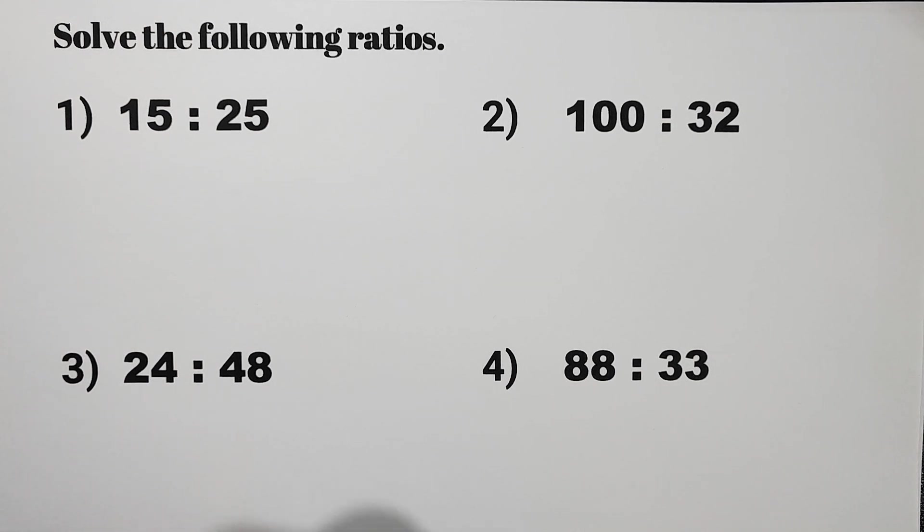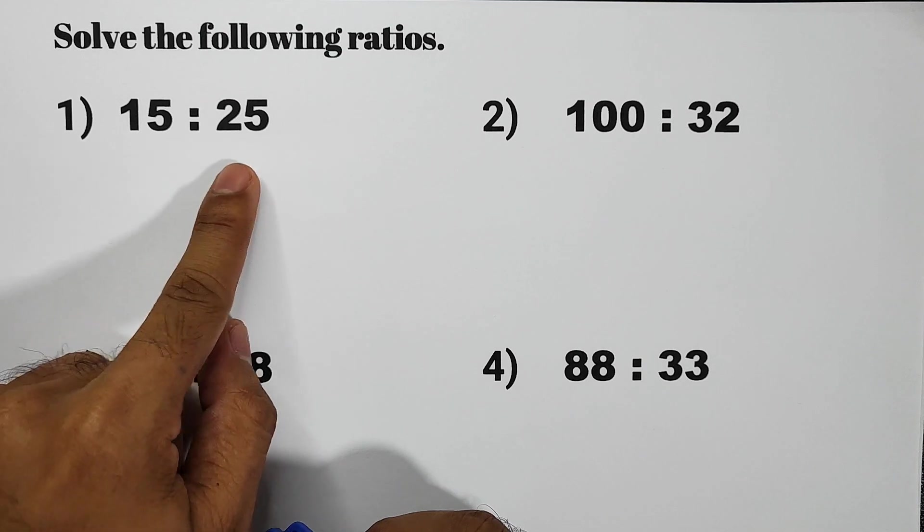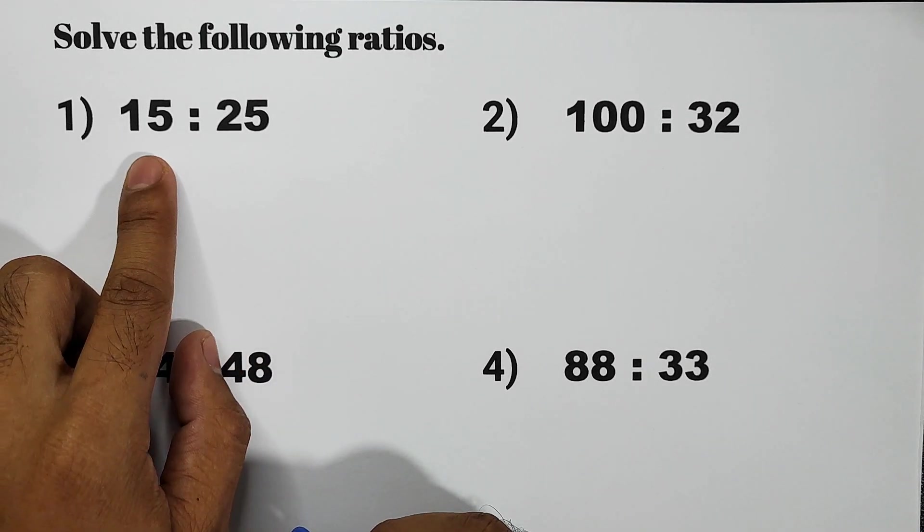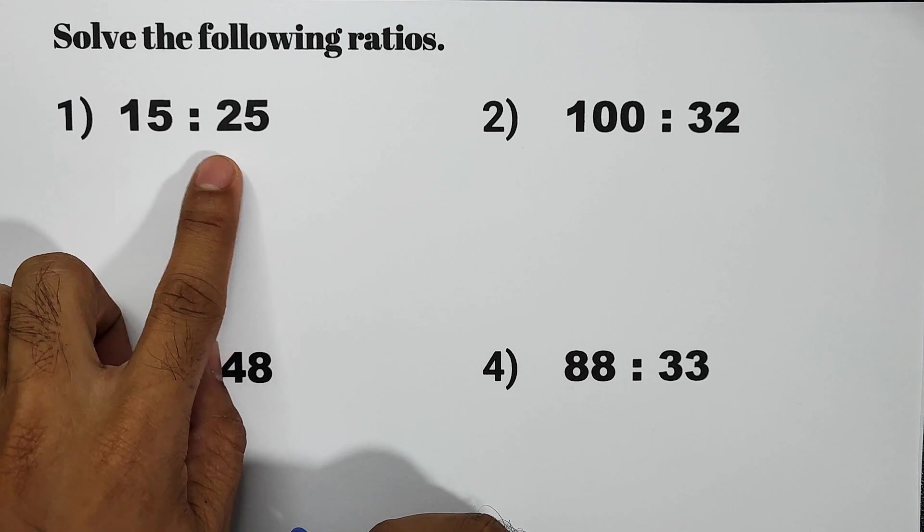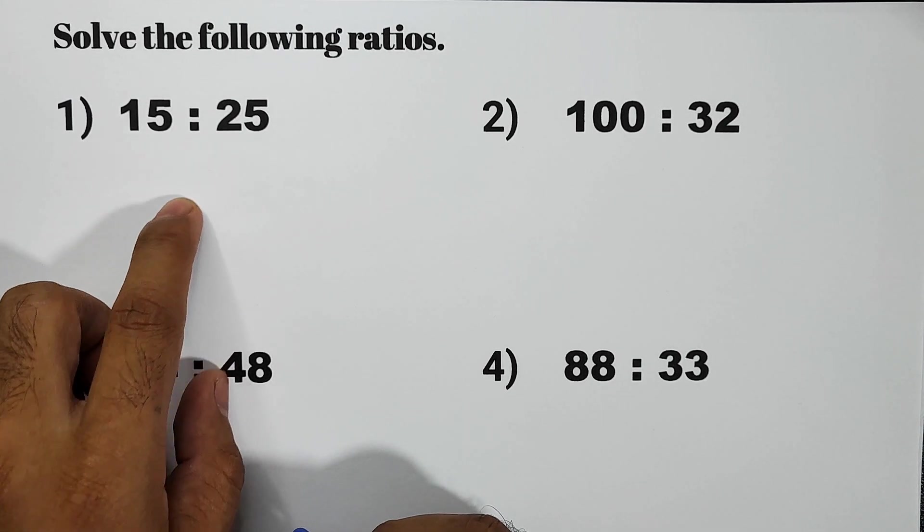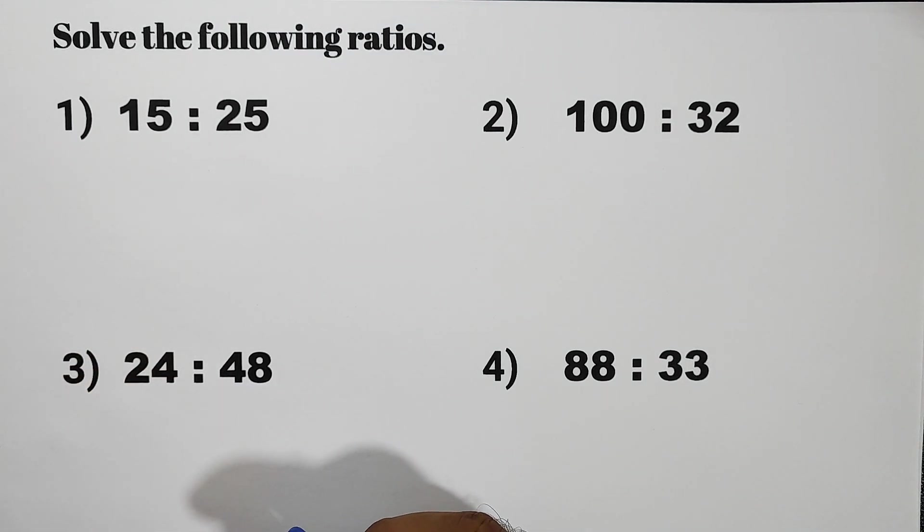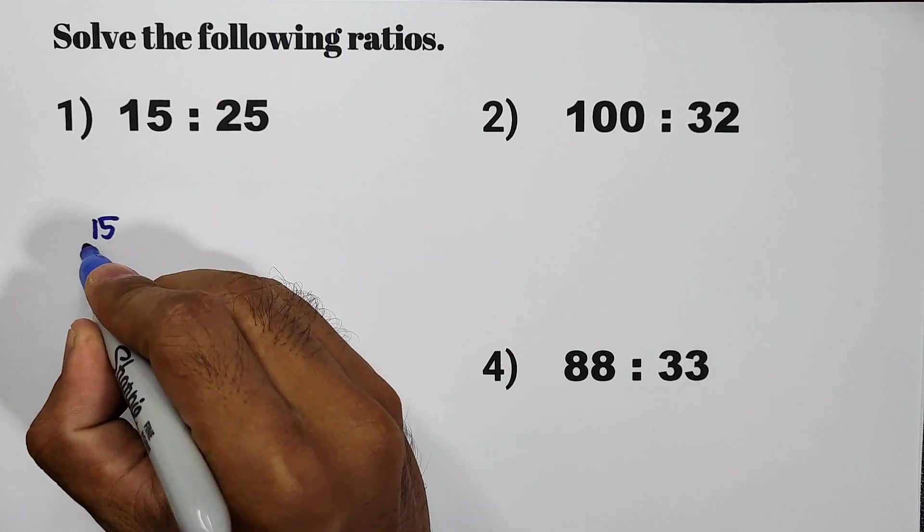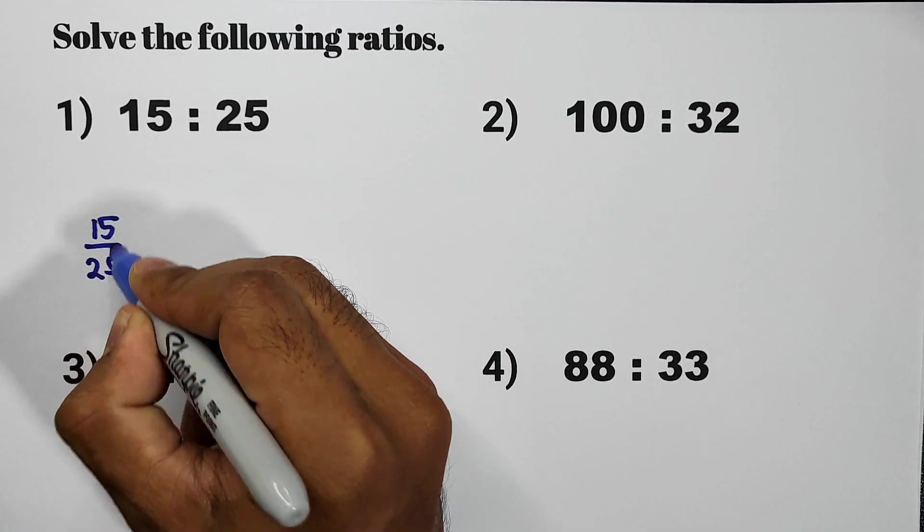Now let us have item number 1, 15 is to 25. So let us simplify 15 to 25. To simplify this ratio, we have to write it in terms of fraction. So 15 over 25 or 15 to 25.